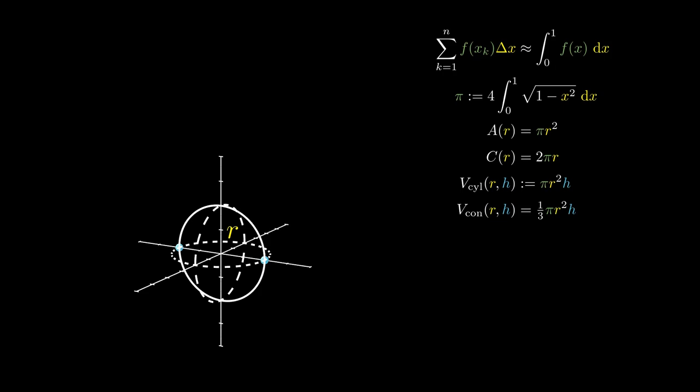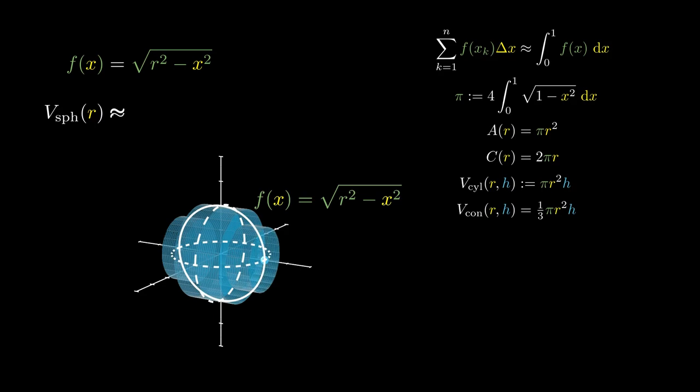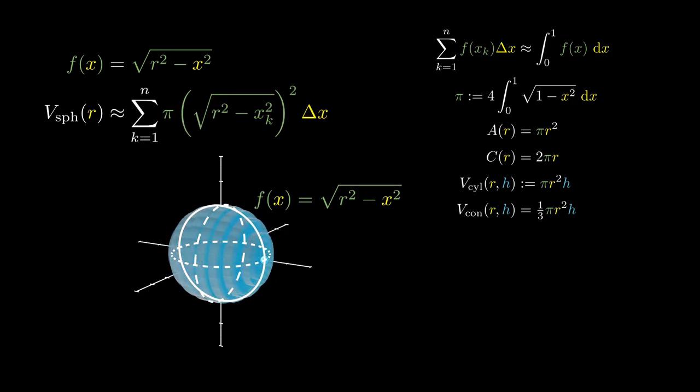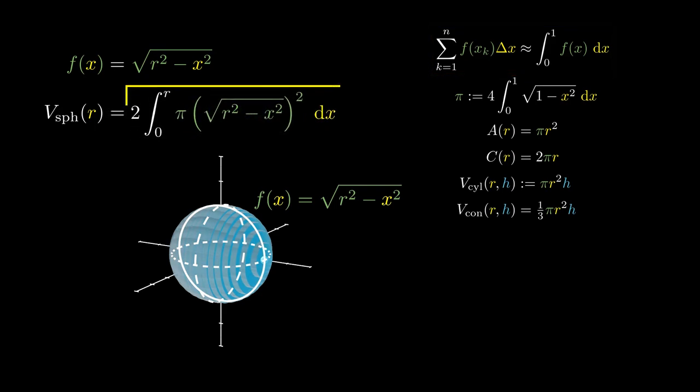you might figure out that the equation of the curve is the square root of r² - x², and what we're going to do is add up a bunch of cylinders. As we add up more and more cylinders, we obtain an integral. I'll let you guys check that this integral evaluates to the famous formula 4/3 πr³. This is the volume of a sphere.